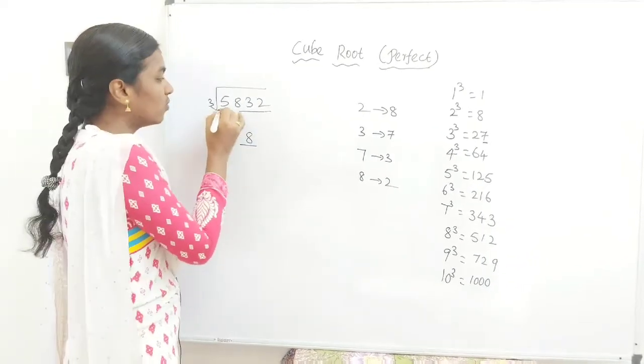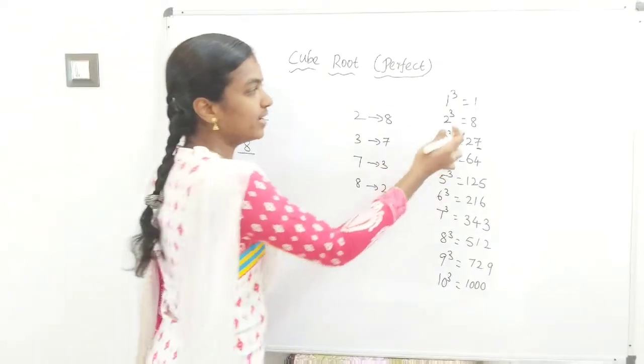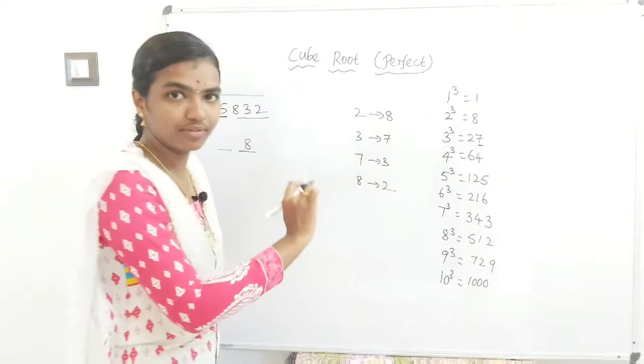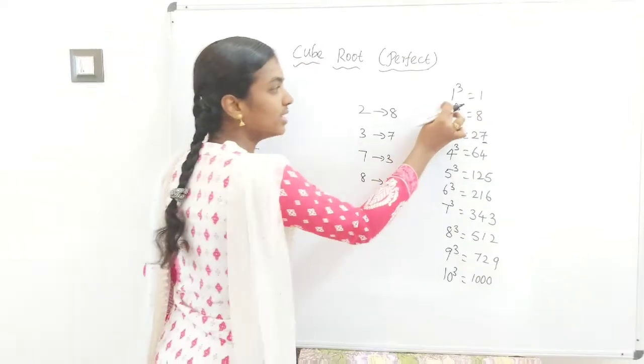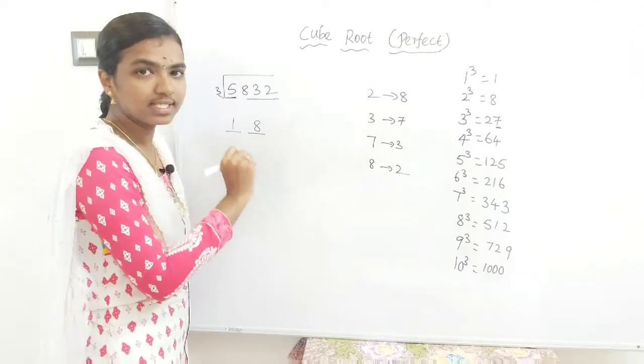Now 5 lies between 1 and 8. We have to take the lowest cube of the number, which is 1. So our answer is 18.